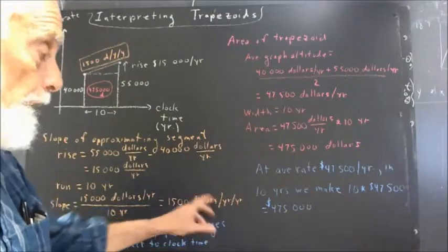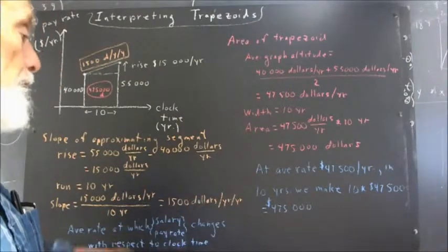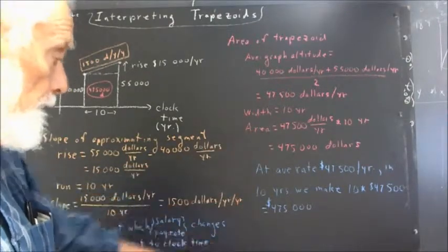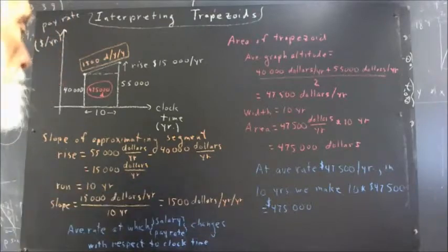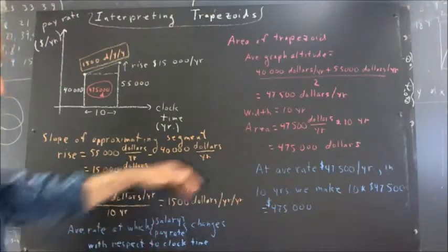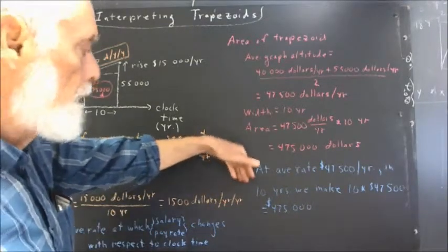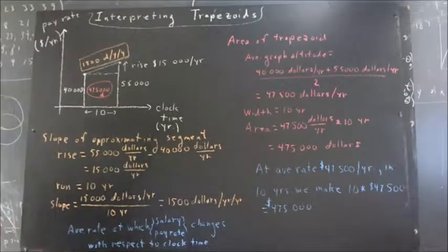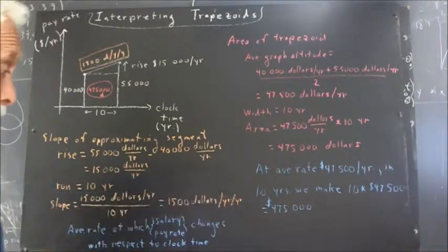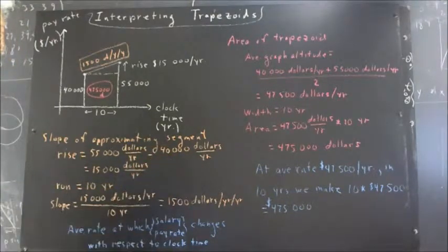Now, that could be written $1,500 per year squared. Dollars over years divided by years gives us dollars over years squared. But the meaning is clear if we read it as dollars per year per year. More compact the other way. Easy to do the units the other way. So they're perfectly good advantages, but right now we're trying to understand what this means.